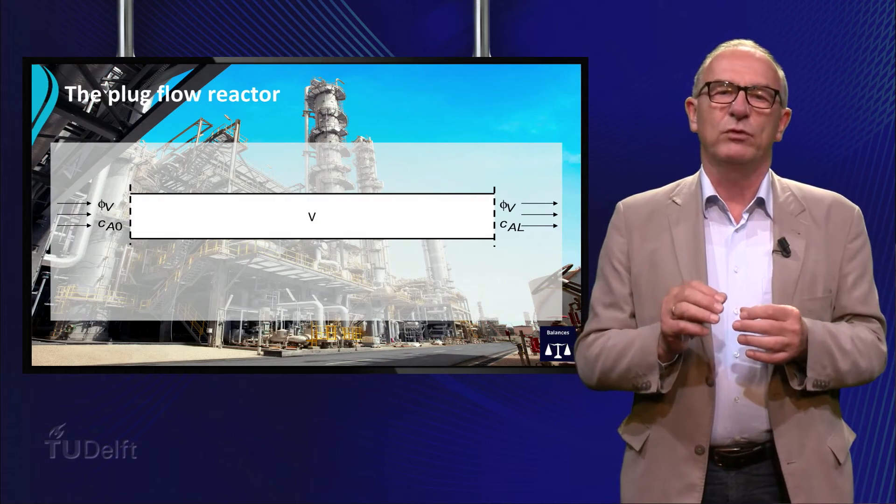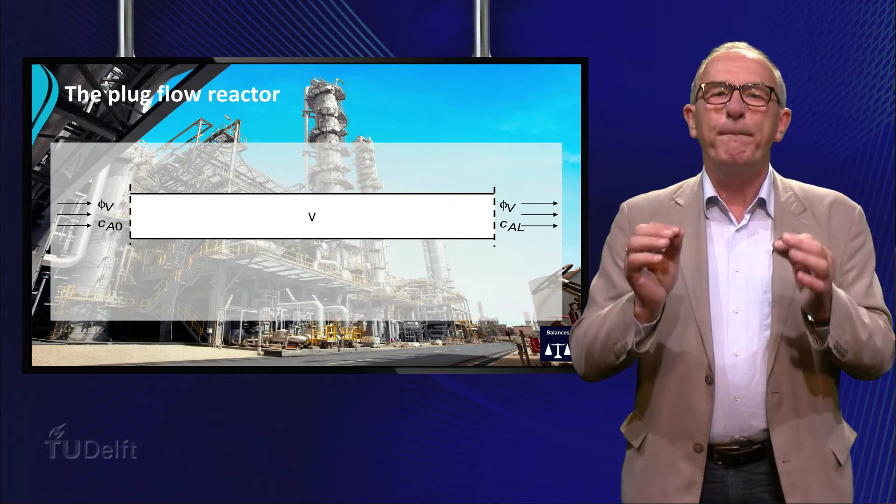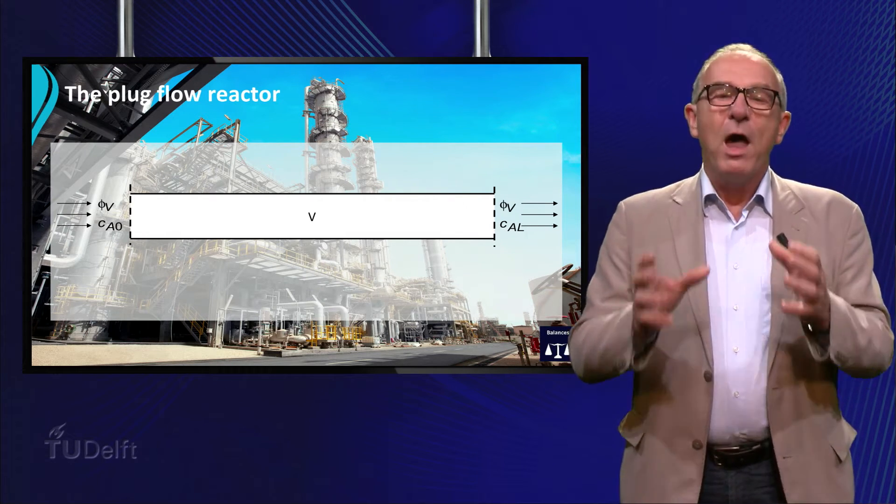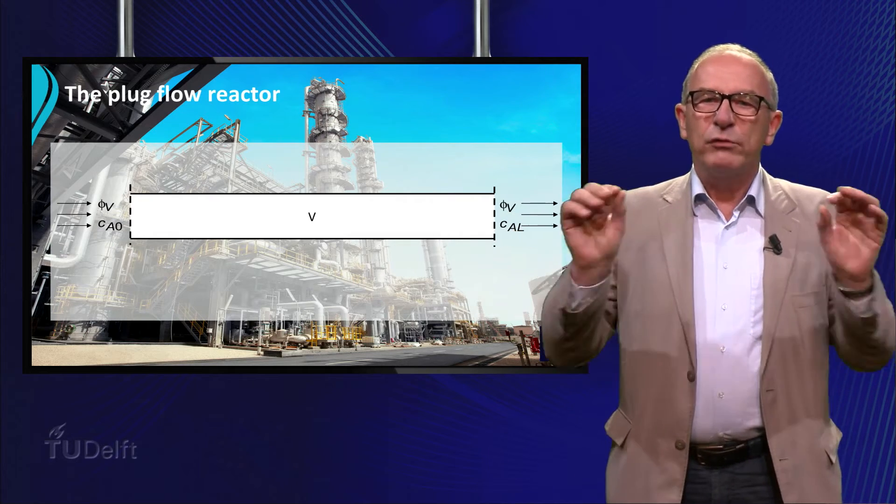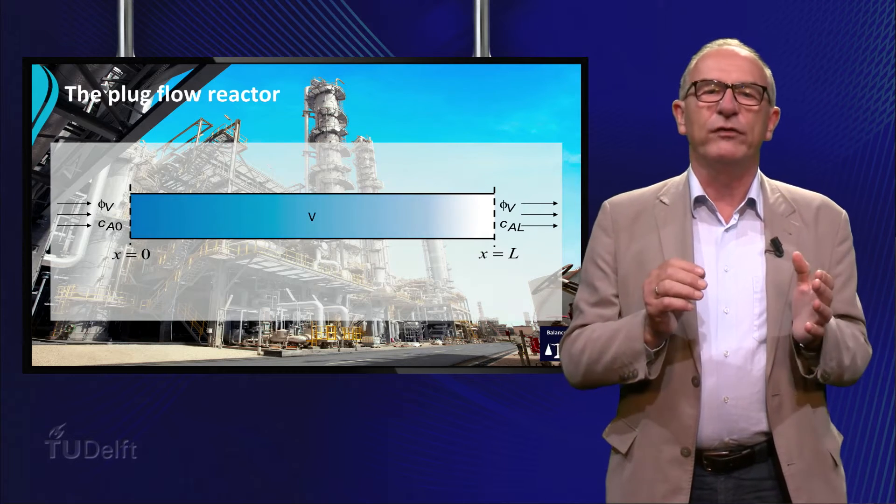To illustrate the principle of a microbalance, we take a chemical reaction in a so-called plug-flow reactor. A plug-flow reactor is a pipe where the reaction starts in the beginning of the tube and ends at the end of the tube.